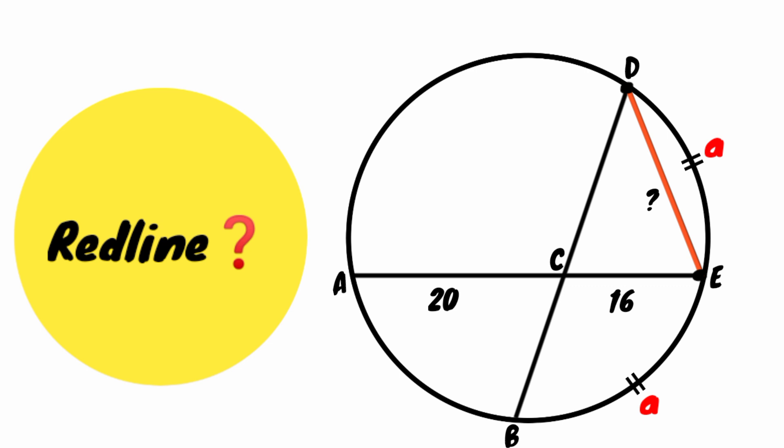Here we have this chord divided into two segments of length 20 units and 16 units. This arc and this both have their length to be a, that is they are congruent.